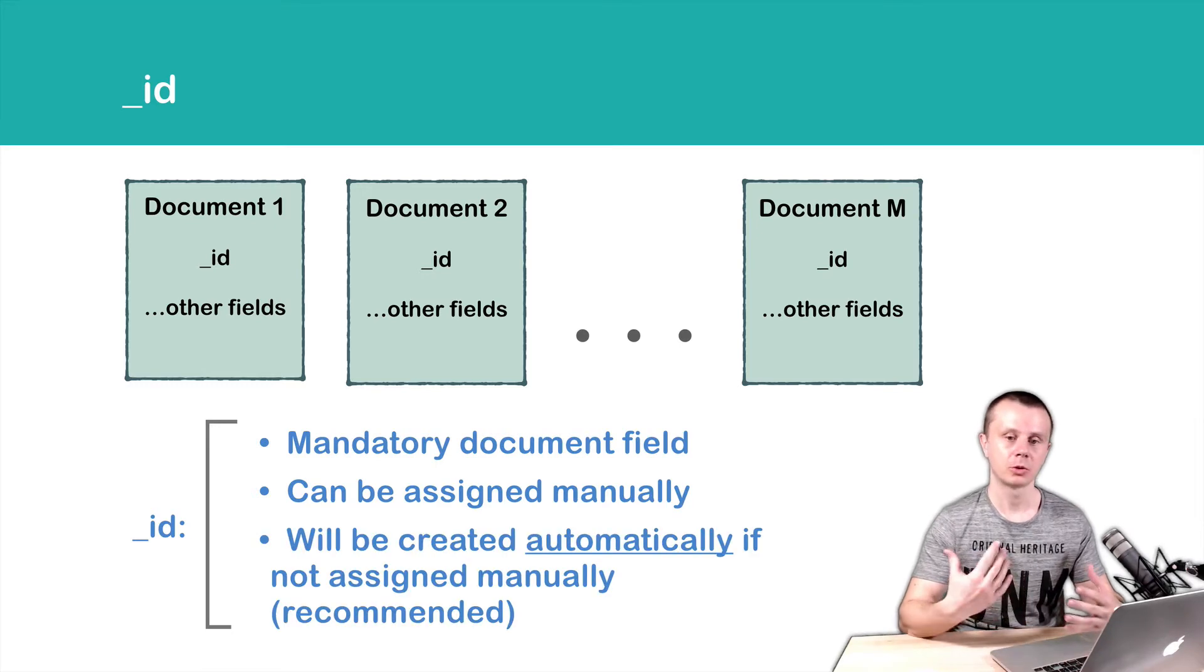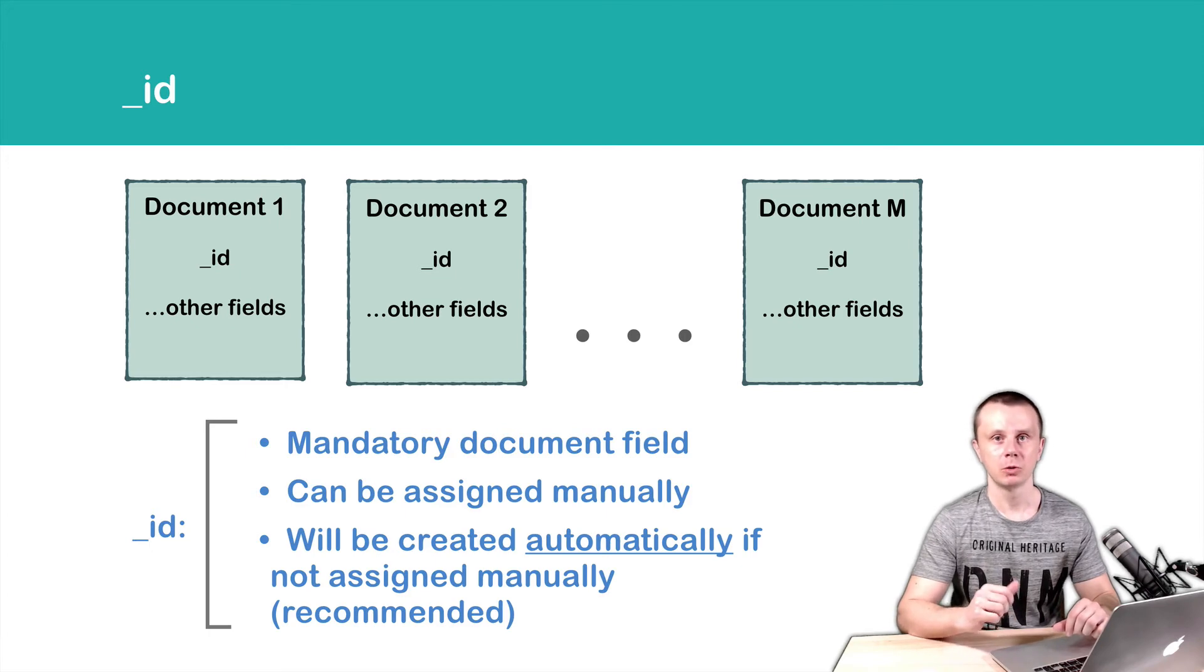But when you create a new document, it is recommended to assign this underscore ID automatically. And MongoDB uses a special BSON variable type called ObjectID—we have discussed it before. Let's talk about this ObjectID next.